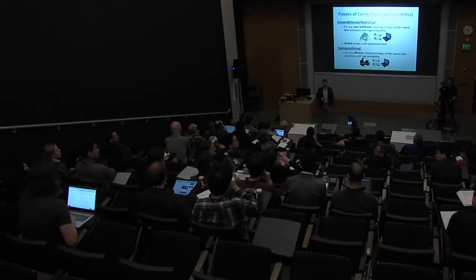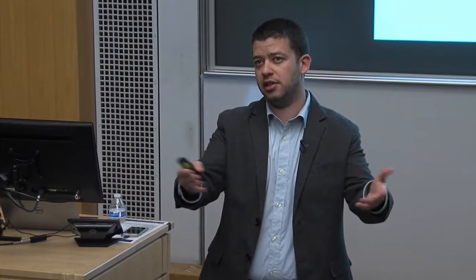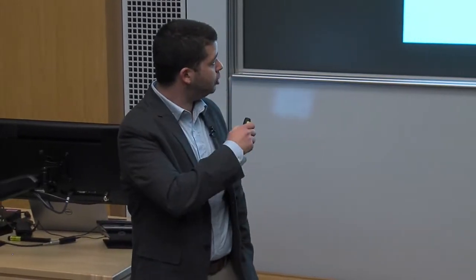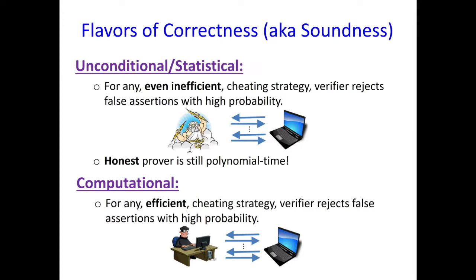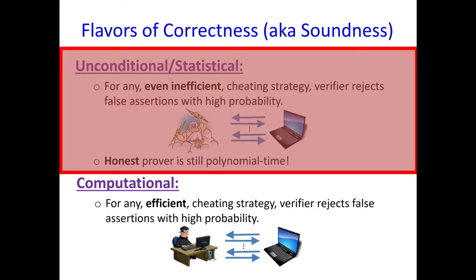In some of the solutions, the prover already knows in advance — its arms are twisted, it has nothing it can send that will convince the verifier, and it knows this. In other solutions, the verifier has some kind of secret hidden state and the prover doesn't know. So in different solutions, the answer would be different. We have these two notions — unconditional and computational correctness. Let's first focus on the stronger notion, unconditional correctness, and see what we can get.